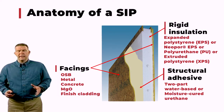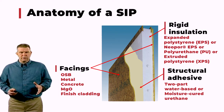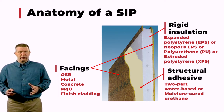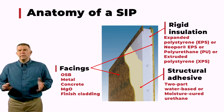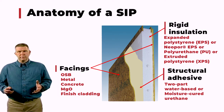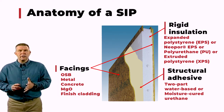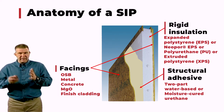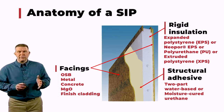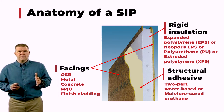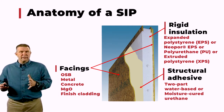Let's get into the anatomy of a SIP. What really is a structural insulated panel and how is it made up? Usually it's three components: the outside skin, the inside core, and the adhesive that holds them together. Let's start talking about the different types of facings we see in the industry.